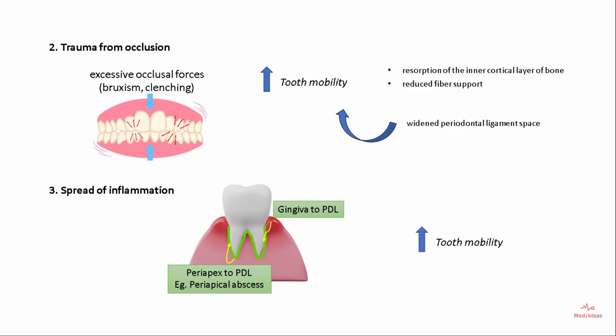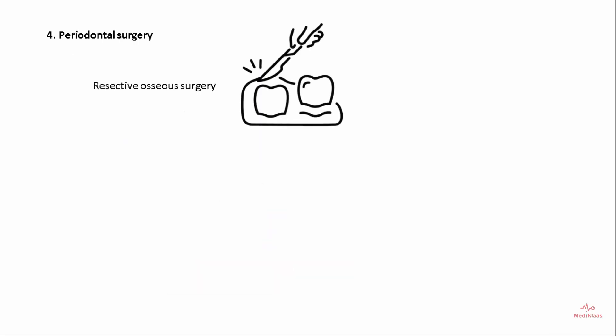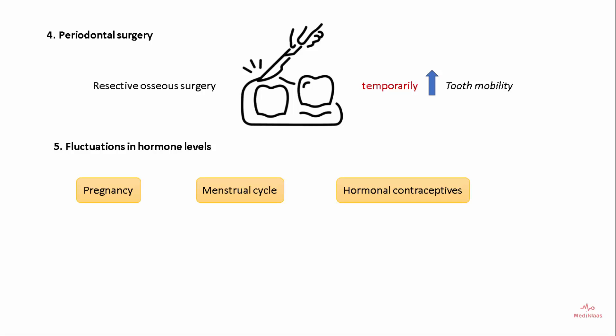Periodontal surgery, mainly resective osseous surgery, can temporarily cause increased tooth mobility. Fluctuations in hormone levels during pregnancy, the menstrual cycle, and with hormonal contraceptive use can also lead to increased tooth mobility due to physicochemical changes in the periodontal ligament.